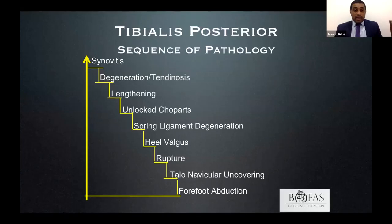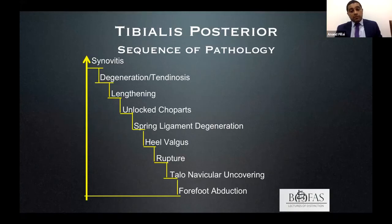There is a snowballing pathophysiology: synovitis, tendinosis, lengthening of the tendon, unlocking of the subtalar joint, spring ligament degeneration and failure, heel valgus, subsequent rupture of the tendon and spring ligament, the talonavicular joint uncovers, and the forefoot abducts.